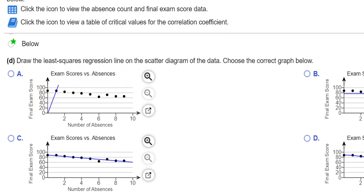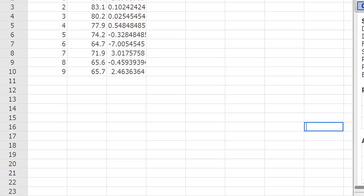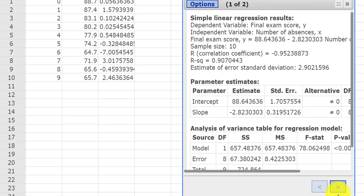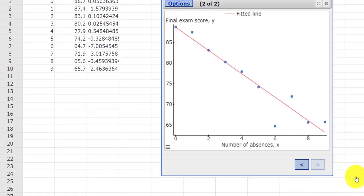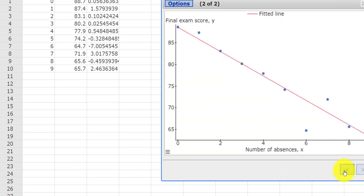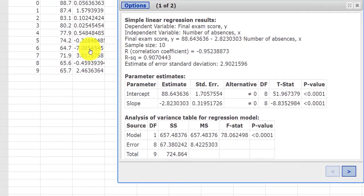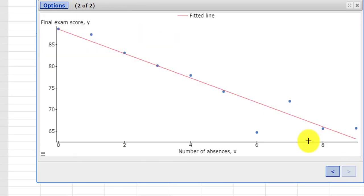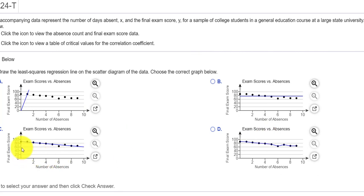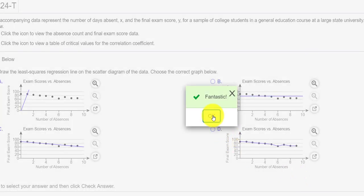And then it says, draw the least squares regression line. So again, we can go back to StatCrunch. And you notice how I just press the arrow to go back and forth. So you see the regression line. Here it is. So it looks like it falls from left to right. The first score is somewhere above 85. And let's see what we have for choices here. So this is no good. Looks like this would be our answer. This is the straight line that goes through most of the points. And we get a fantastic.